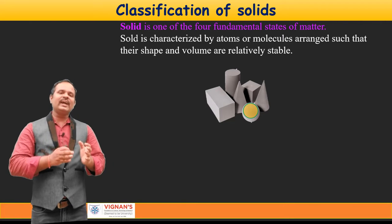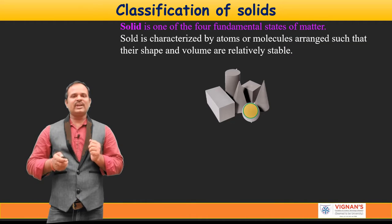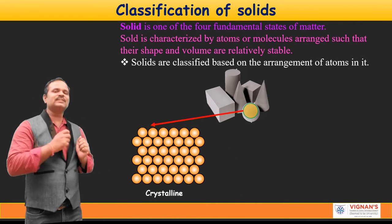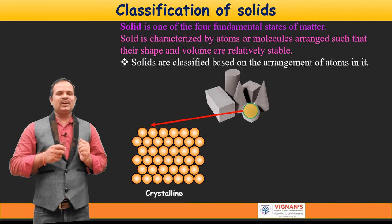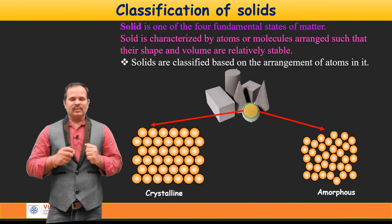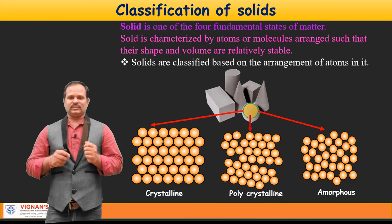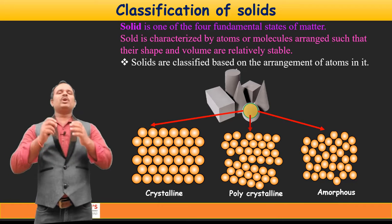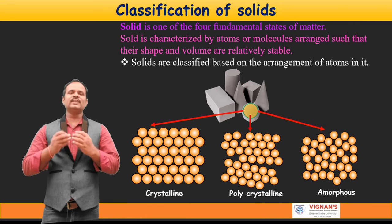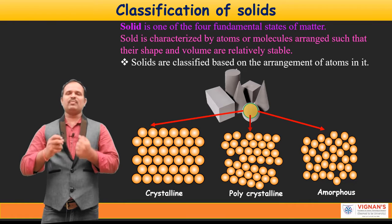Based on the arrangement of atoms in solids, we can classify solids as follows. If the atoms are arranged regularly and periodically, as shown in the figure, then they are called crystalline materials. If the atoms are arranged randomly, then they are called amorphous materials. Intermediate between these two, there exist polycrystalline materials. Crystalline and polycrystalline materials have great advantages and many applications in science and technology.